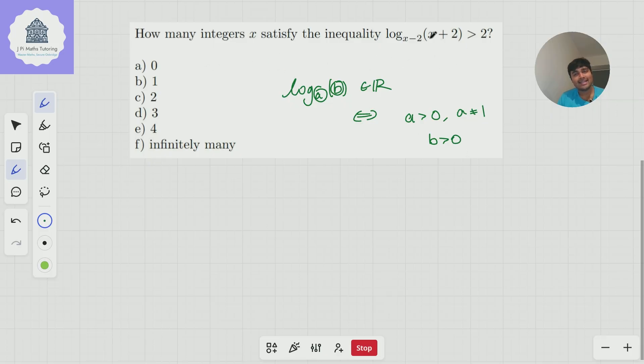So here, we want integers x to satisfy this inequality. So we need x minus 2 to be positive, x plus 2 to be positive, and x minus 2 to not equal 1. So this here tells me x must be bigger than minus 2, this one here tells me x must be bigger than 2, and this one here tells me x can't be 3.